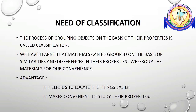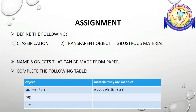To understand the lesson better, here is an assignment. Define the following: classification, transparent object, lustrous material. Name five objects that can be made from paper. Complete the following table: objects are given on one side, and you have to write the materials they are made of.